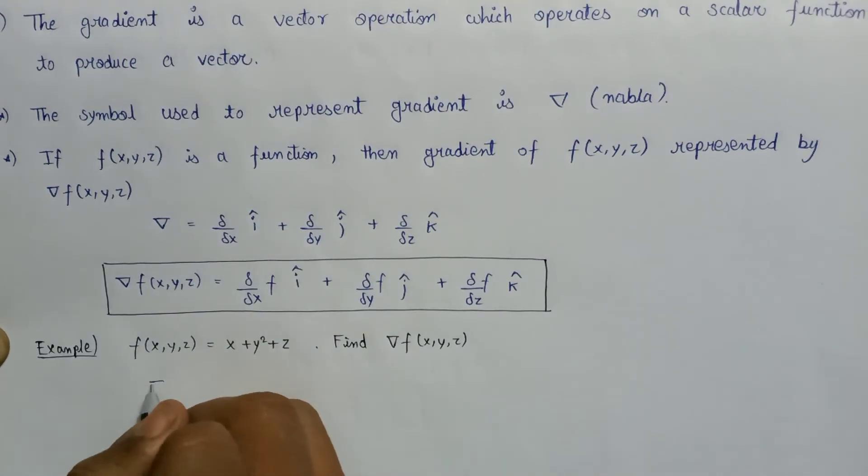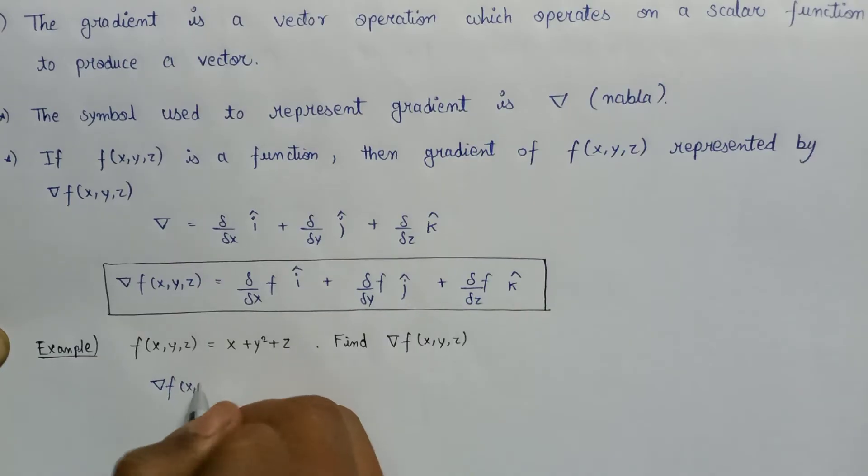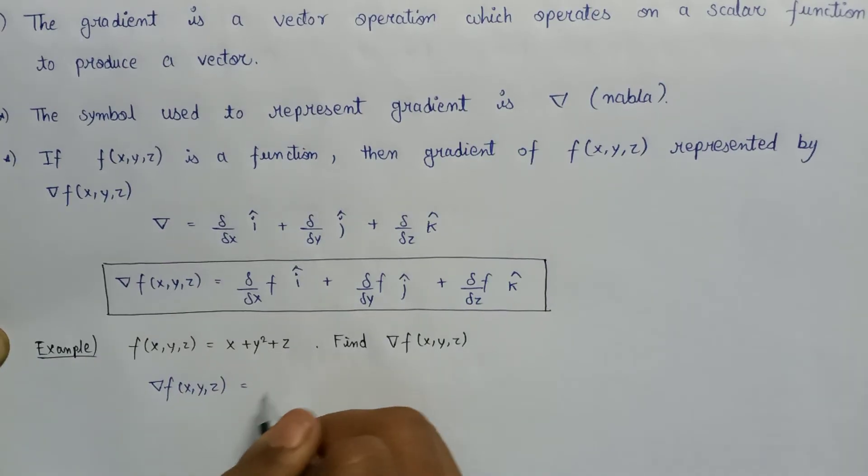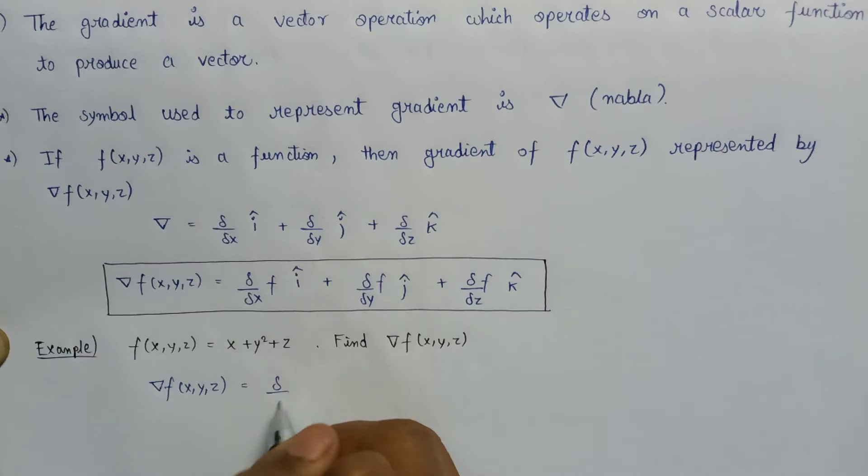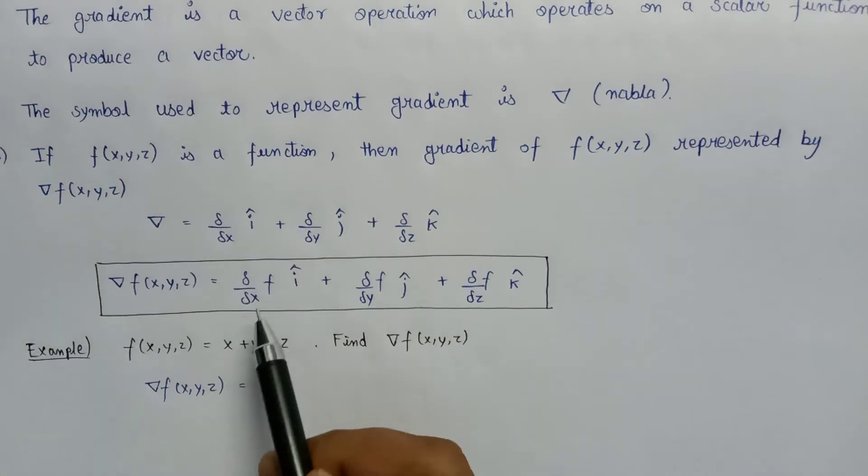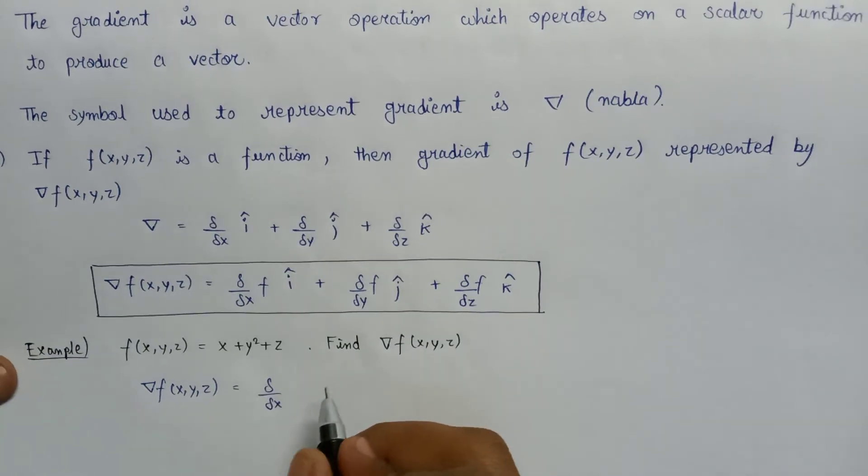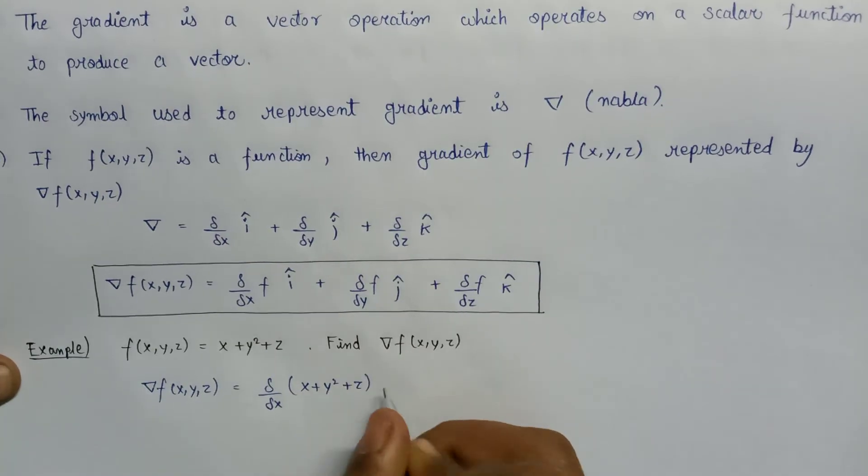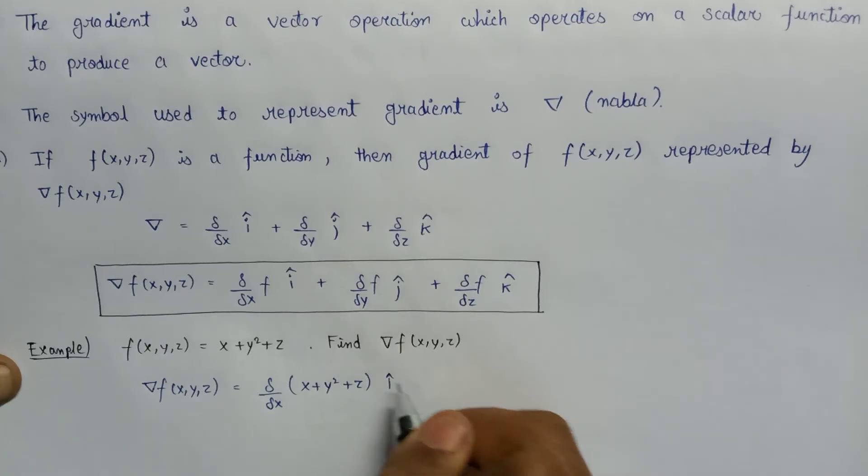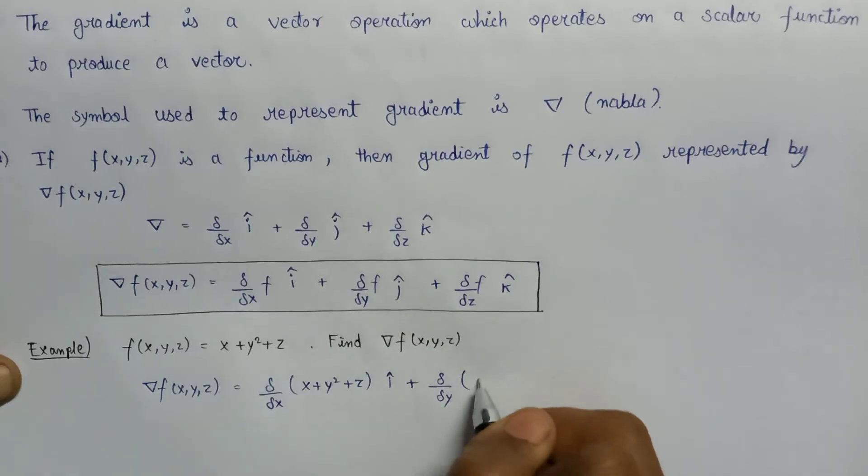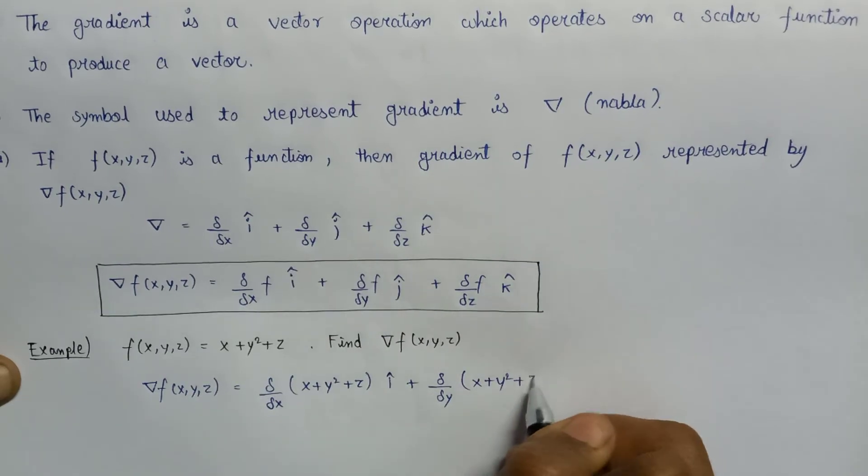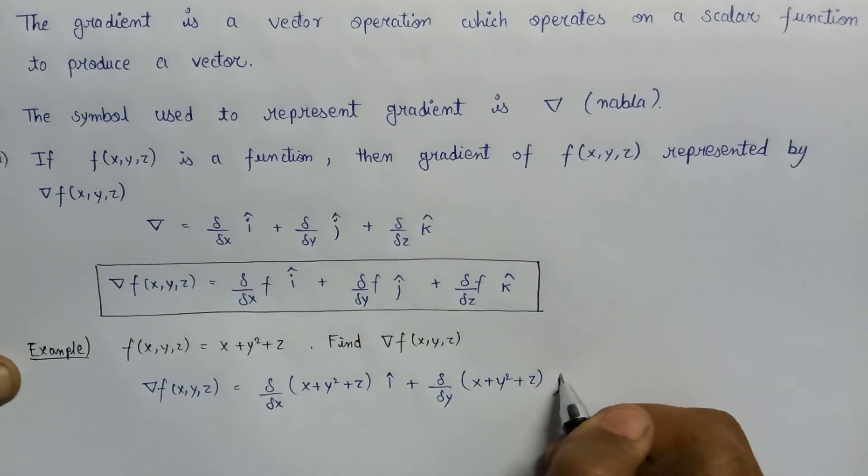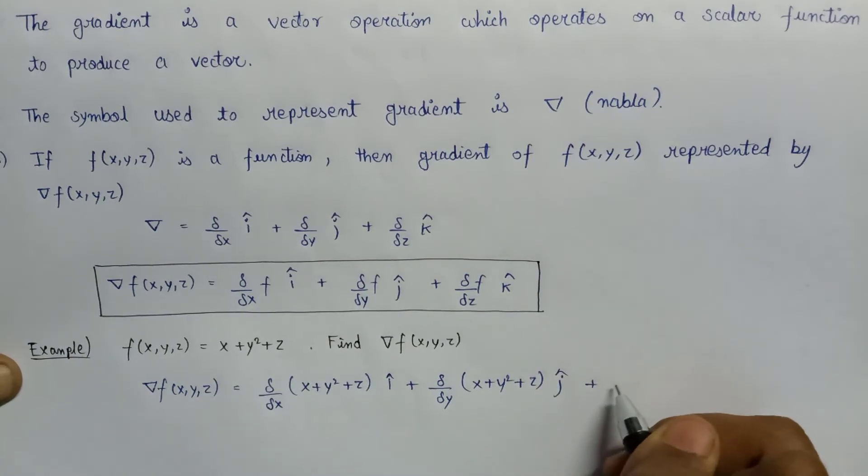Here, del f of x comma y comma z will be equal to del over del x—here, instead of writing f we have to put this function, that is x plus y square plus z—into i cap, plus del over del y, x plus y square plus z into j cap, plus del over del z of the same function into k cap.